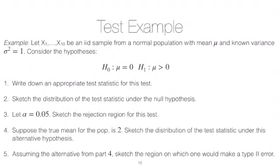Let's take a look at a simple hypothesis test example. In this case, let's suppose that we have 10 data points from a random sample from a normal population with mean mu and a known variance equal to 1.